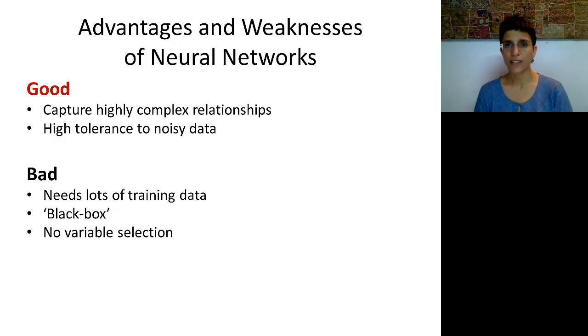Next, some methods like trees will give us some nice variable selection. We can see at the end which predictors played an important role and which did not. In neural net, in our black box neural net, we don't really know which variables played an important role.